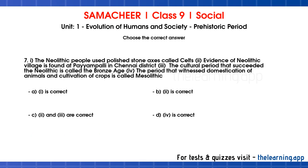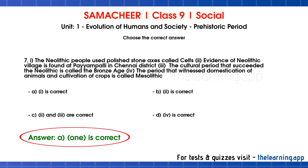Seventh question — first statement: the Neolithic people used polished stone axes called celts. Second: evidence of a Neolithic village is found at Payampalli in Chennai district. Third: the cultural period that succeeded the Neolithic is called the Bronze Age. The first statement is correct — Neolithic people used stone celts and stone axes. Only the first statement is correct.